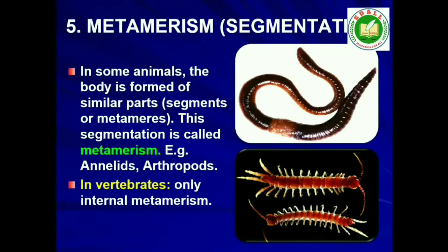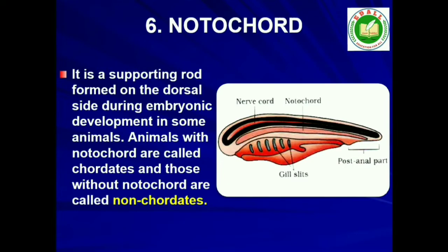5. Segmentation: In some animals, the body is externally and internally divided into segments with a serial repetition of at least some organs. For example, in earthworm, the body shows this pattern called metameric segmentation, and the phenomenon is known as metamerism. 6. Notochord: Notochord is a mesodermally-derived rod-like structure formed on the dorsal side during embryonic development in some animals. Animals with notochord are called chordates, and those which do not form this structure are called non-chordates, e.g., Porifera to echinoderms.